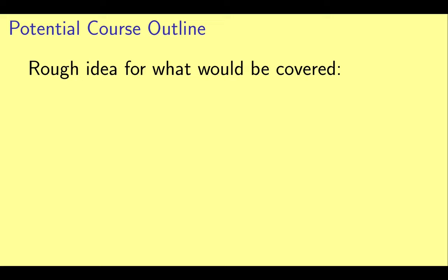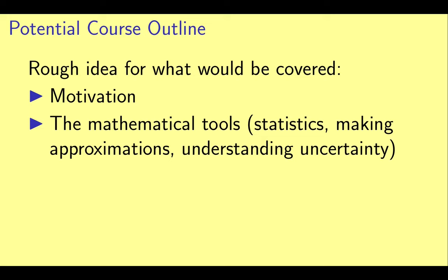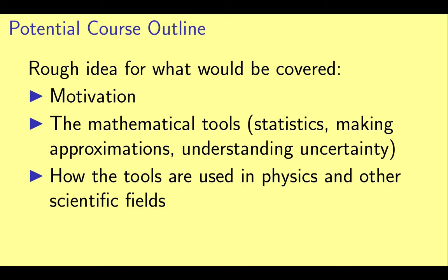Here's a very rough outline for what the course would cover. First, there's the motivation for why one would want to think like a physicist. Next are some mathematical tools and concepts frequently used by physicists. These include concepts in statistics, the importance of making useful approximations, and understanding the role of uncertainty in scientific results.